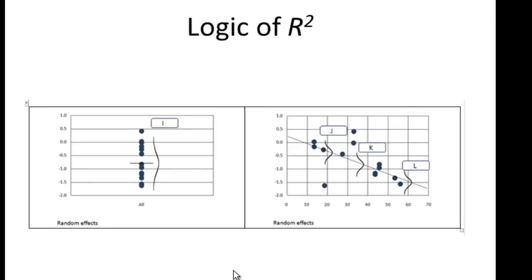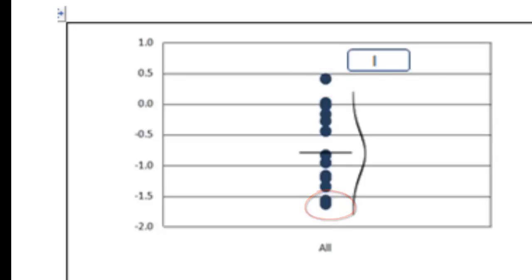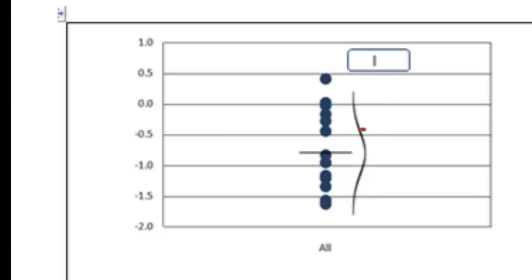When we don't have any predictors and simply look at the 13 studies, the effect sizes go from plus 0.5 (a risk ratio of about 1.5) all the way down to minus 1.5 (a risk ratio of about 0.20). About 95% of the true effects fall within that range — that dispersion is tau, the standard deviation of true effects, times 4. Once we add latitude as a predictor, the predicted effect for studies in Chicago is like this, and we'd expect those effect sizes to fall within a relatively narrow range — this is the new tau.